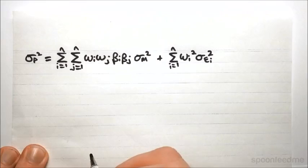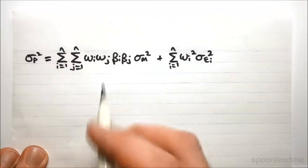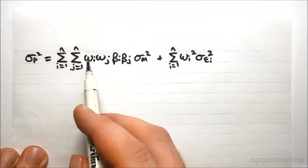Now what people actually typically do is say that when diversifying, they assume that they hold an equal amount of every single asset. So they say that the weights are all equal to 1 over n.